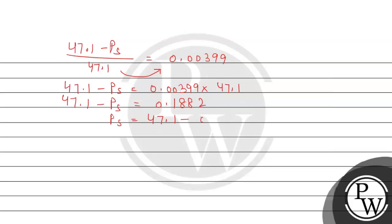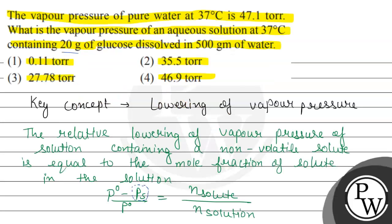So 47.1 minus PS equals 0.1882, which means PS equals 47.1 minus 0.1882, giving final answer of 46.91 torr.